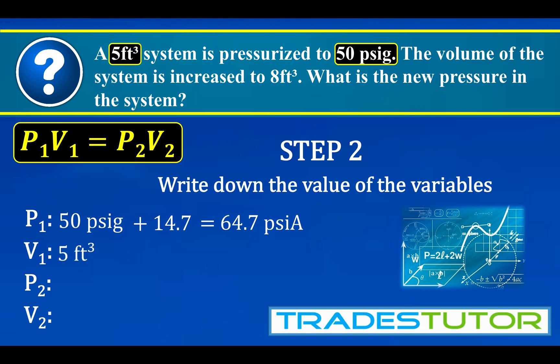All right, volume, it is what it is. So five cubic feet. The final pressure, or P2, well, that's what we're looking for. And the final volume is eight cubic feet. So now we have all of our variables written down. We're good to go and start plugging them in.